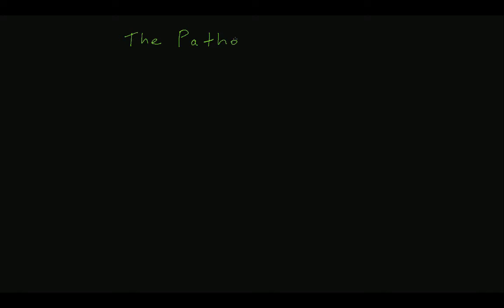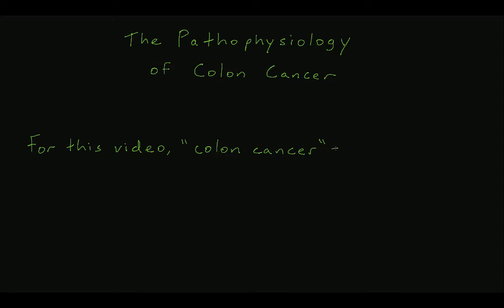Now that we know the basic anatomy of the colon, we can turn our attention to a discussion of colon cancer. When we say colon cancer, we usually mean a cancer of the epithelial lining of the colon — adenocarcinoma specifically. Adenocarcinoma of the colon is the most common malignancy of the GI tract and the third most common malignancy among adults in the United States. Although there are other types of neoplasms that can be found in the colon, they are exceedingly rare and will not be discussed in this video.